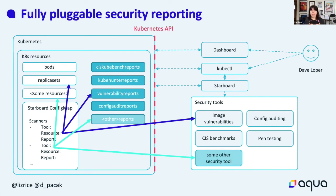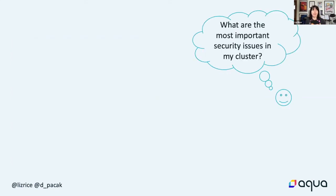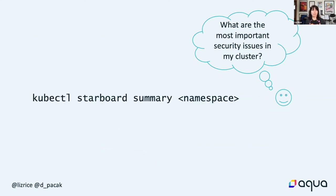We would be very keen to hear feedback on the custom resource definitions we've created so far. We hope they're flexible enough to plug in other alternative tools, but we're very open to hearing feedback. The last thing we wanted to talk about in terms of the future of Starboard is helping Dave Loper ask: what are the most important security issues in my cluster, or in the particular namespace I care about? We want to get to a point where we can summarize the most important issues from across these different types of security report and use Starboard to make it very easy for Dave to find out what security issues he really needs to worry about.